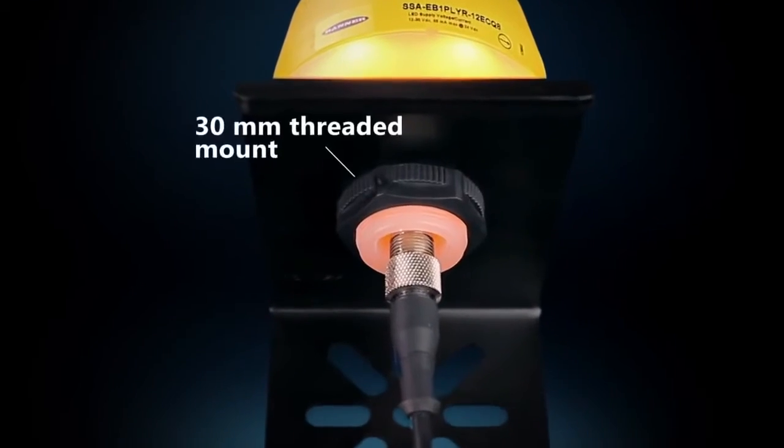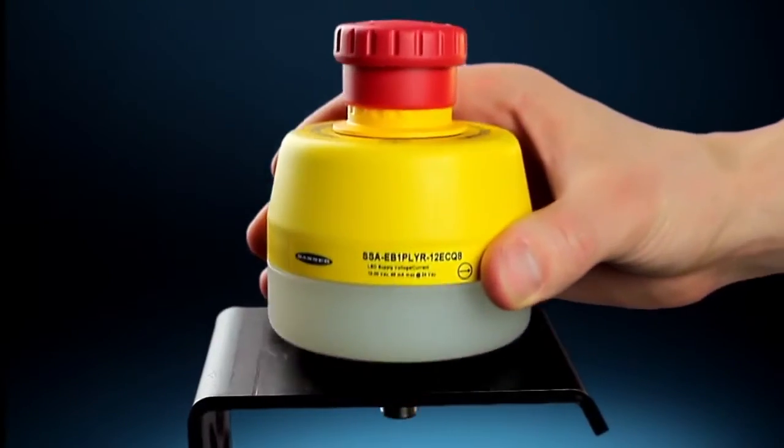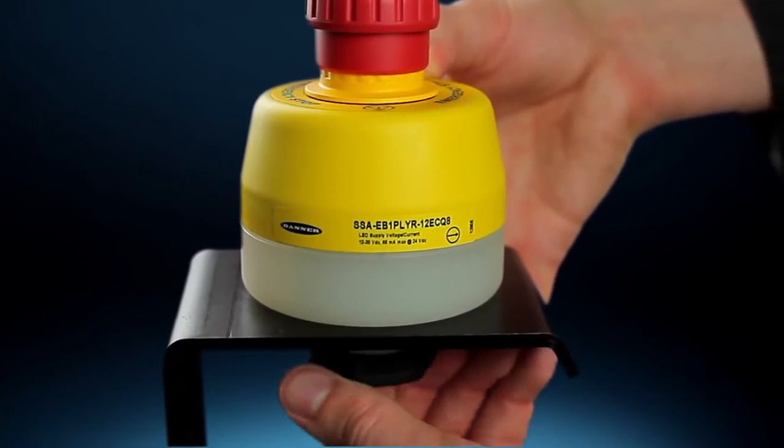The 30mm threaded mount enables a quick installation process. The robust all-in-one housing is ready to install out-of-the-box, eliminating labor-intensive assembly and wiring.